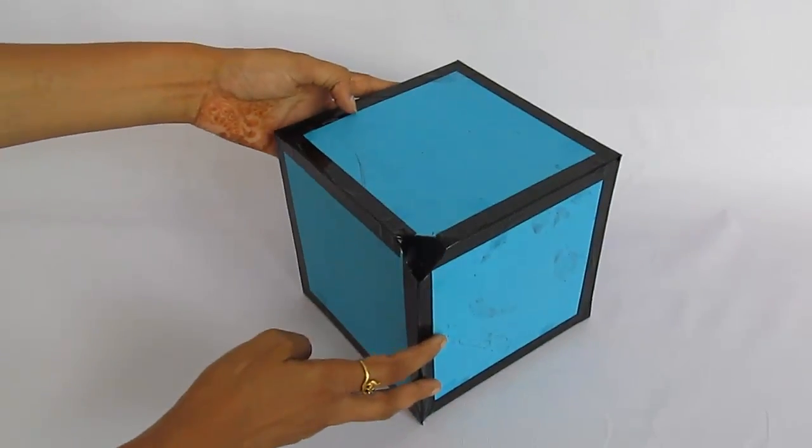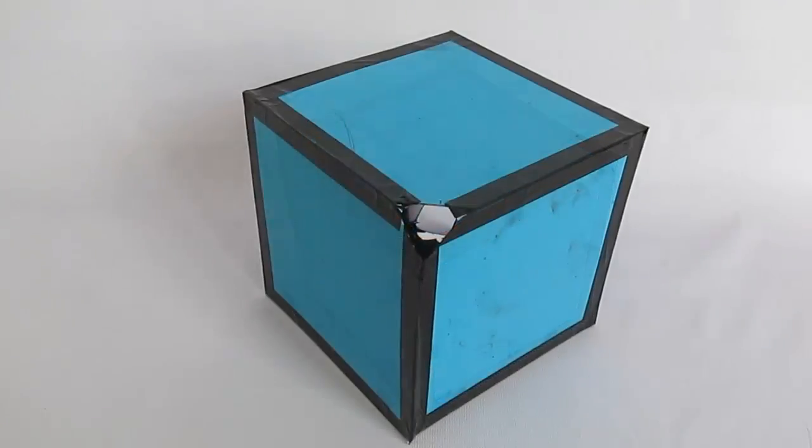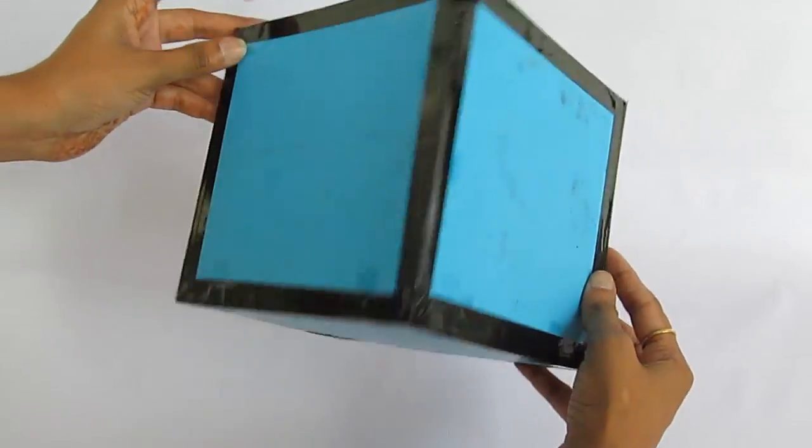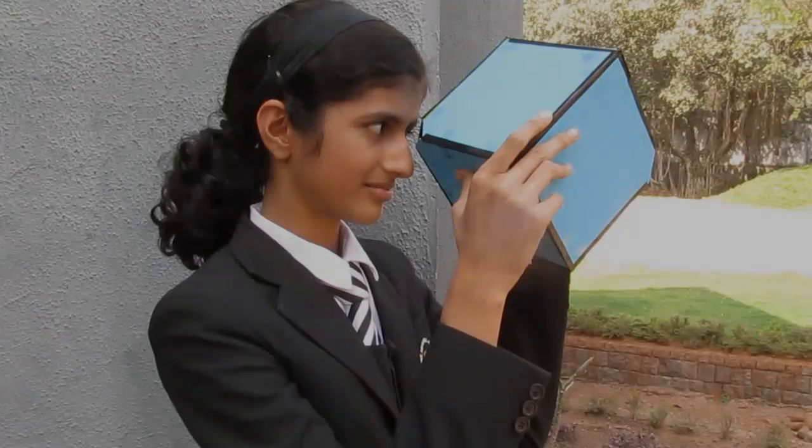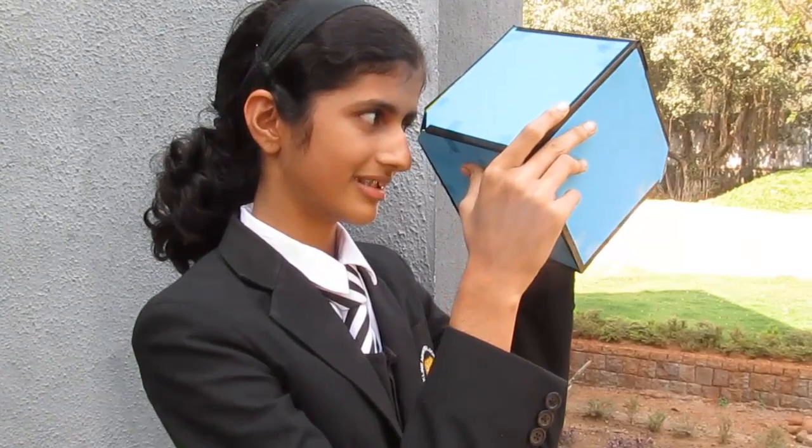If you have arranged the squares correctly, your cube will have two diagonally opposite open corners. One is for you to look at the images and the other one is to allow the light in.